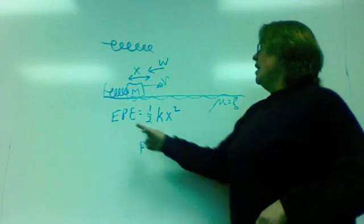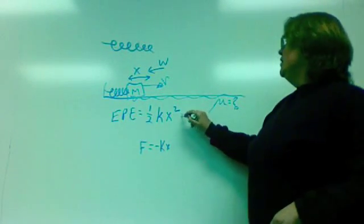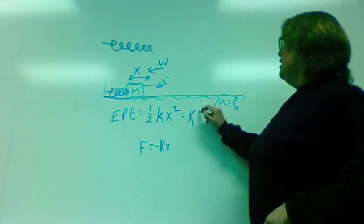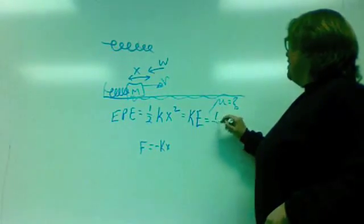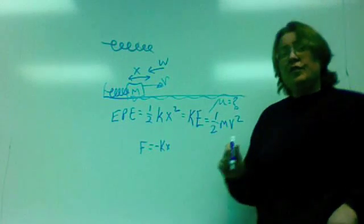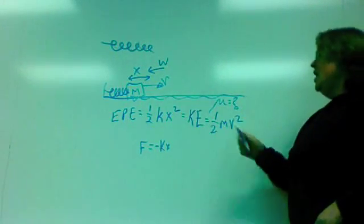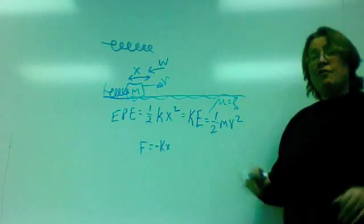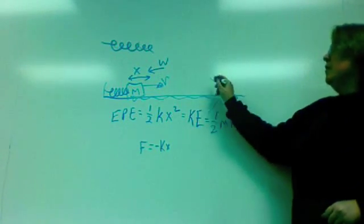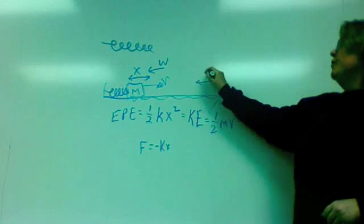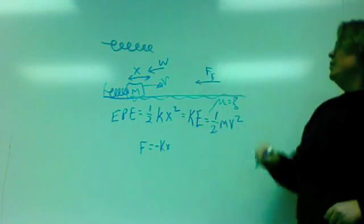And that elastic potential energy gets converted to kinetic energy of the mass, one-half mv squared. Now Newton's first law would tell me that this mass would go in a straight line at a constant rate forever and ever and ever. However, there's a frictional force opposing the motion.